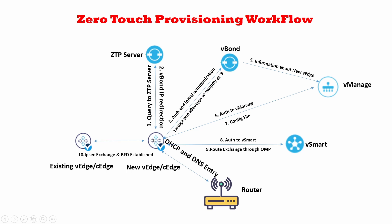Now that the new vEdge has the vBond IP, the next step is to send authentication and initial communication to vBond. The vEdge tells vBond its serial number, certificate, system IP, and other details. vBond, acting as the security check for that organization, holds the entire database of vEdges in the environment.